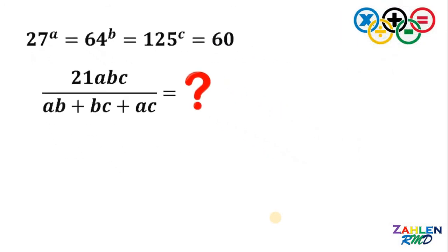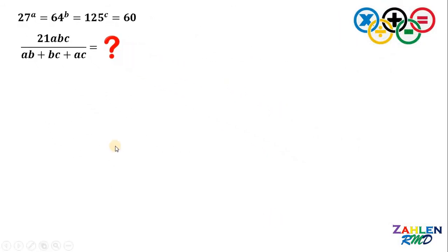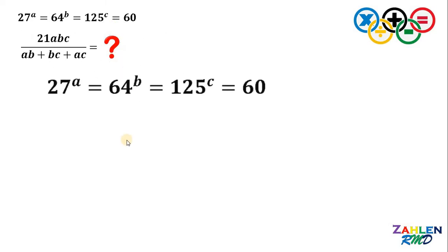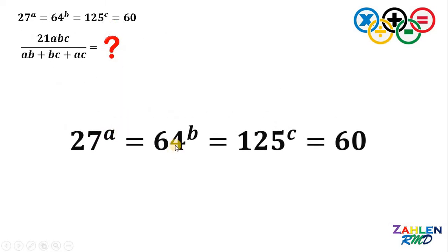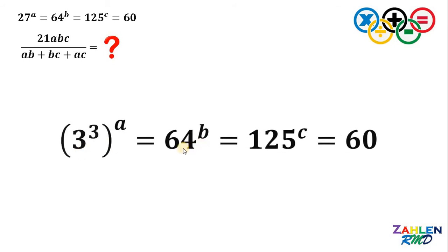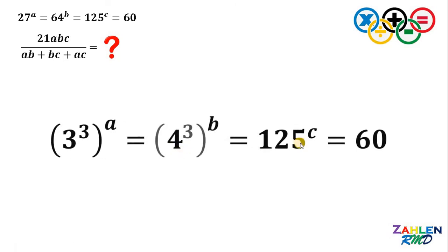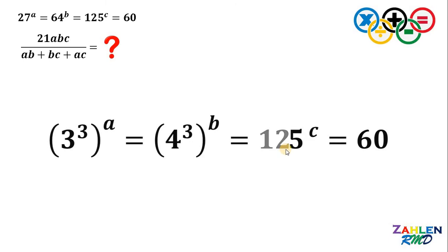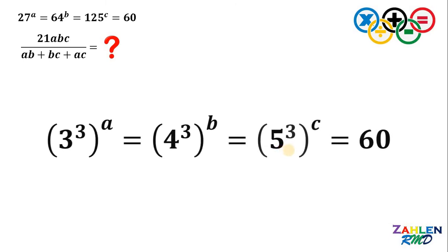Now, let's answer this question together. To answer this question, let's have the given equation. We have 27 raised to A equals 64 raised to B equals 125 raised to C equals 60. Notice that 27 is just 3 raised to 3, and 64 is just 4 raised to 3, while 125 is 5 raised to 3. At this point, we will use some laws of exponents.